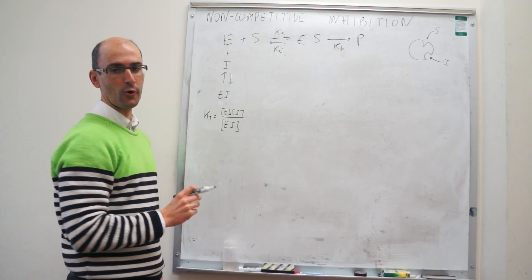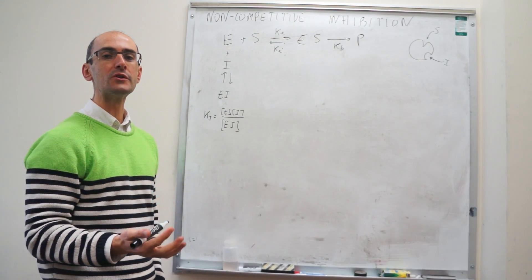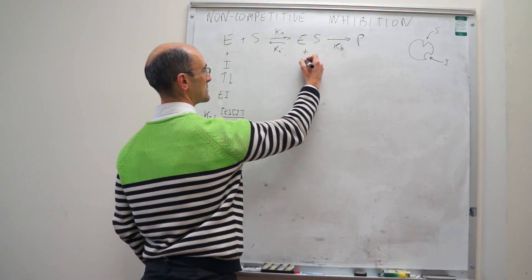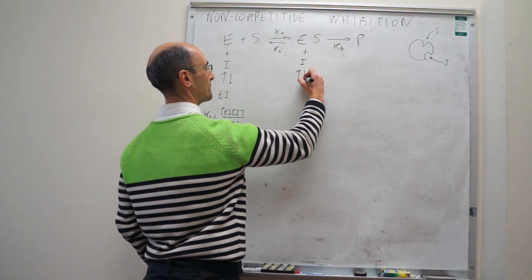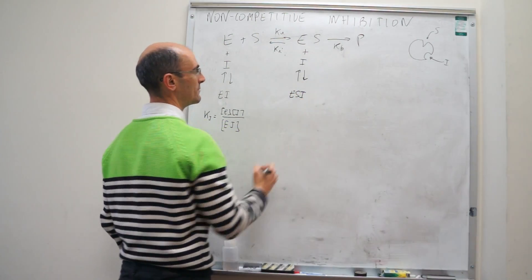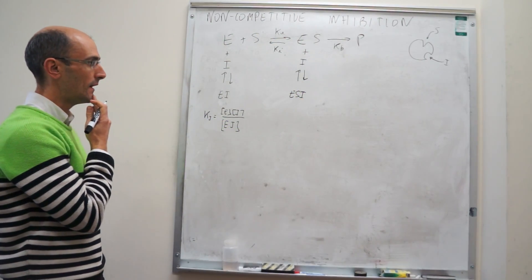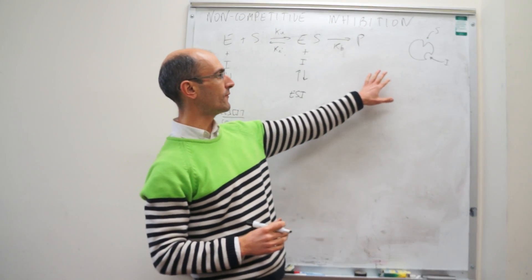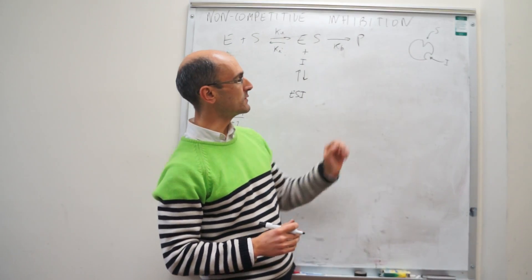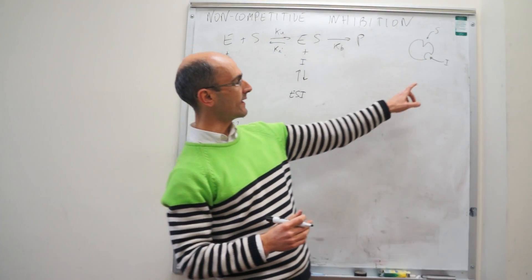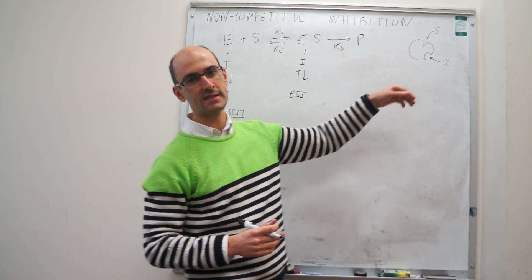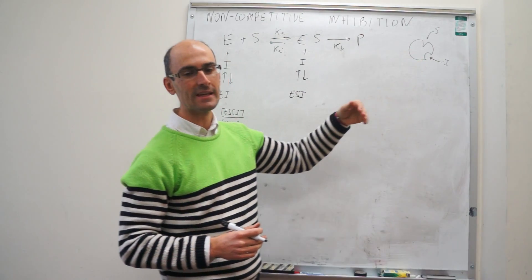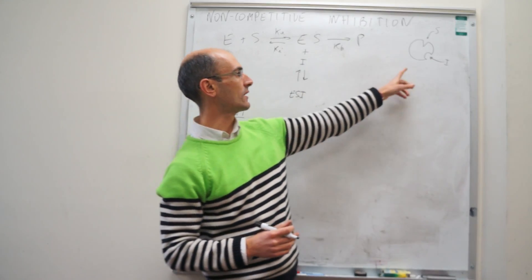What we have here is what happened for competitive inhibition. The only change in non-competitive is that the inhibitor can also bind to the enzyme-substrate complex and generate an enzyme-substrate-inhibitor complex. The reason the inhibitor can do this is because it binds to a different active site than the substrate, so it really doesn't matter if the substrate is bound or not.